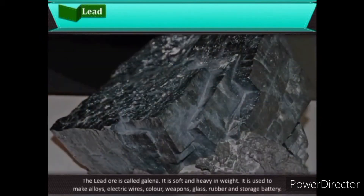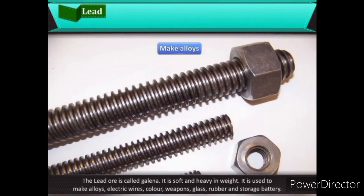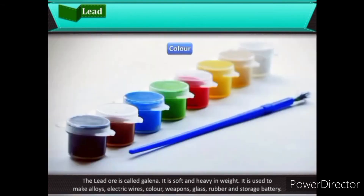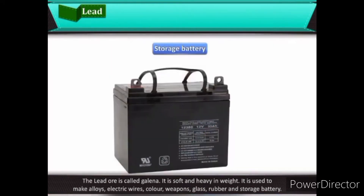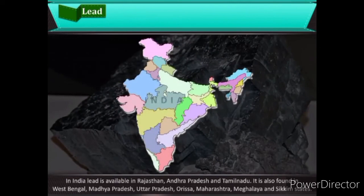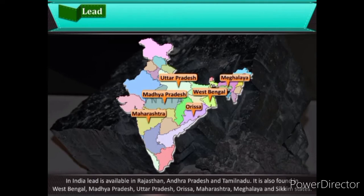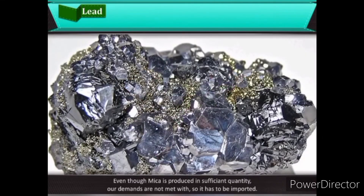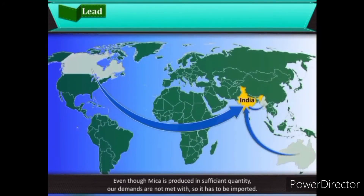The lead ore is called galena. It is soft and heavy in weight and is used to make alloys, electric wires, weapons, glass, rubber, and storage batteries. In India, lead is available in Rajasthan, Andhra Pradesh, and Tamil Nadu, and is also found in West Bengal, Madhya Pradesh, Uttar Pradesh, Orissa, Maharashtra, Meghalaya, and Sikkim. Even though mica is produced in sufficient quantity, demands are not met, so it has to be imported.